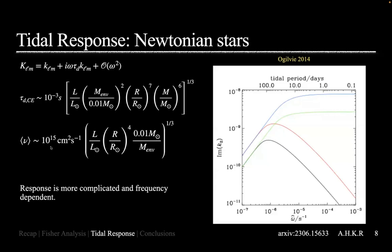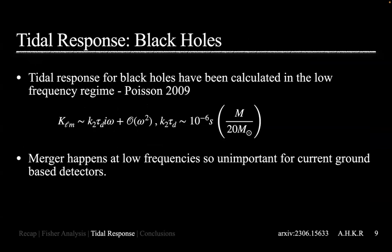A sample plot from a review article shows the imaginary part of the L=2 response function as a function of frequency, with different viscosity profiles. Tidal response of black holes has also been calculated in the low frequency regime. Since black holes have no love numbers, the first term vanishes and only the dissipative term remains. This dissipative term scales with the mass—for a 20 solar mass black hole, it's of order 10^-6 seconds. For ground-based detectors, this value is too small to measure for large black holes because they quickly merge and there aren't enough cycles to put constraints.